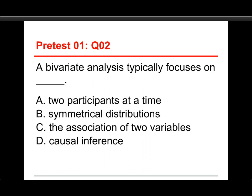For number two: a bivariate analysis typically focuses on what? Two participants at a time, symmetrical distributions, the association of two variables, or causal inference? The answer is C, the association of two variables. Bivariate means two variate variables, and you're looking at associations. This is typically contrasted with univariate, which means one variable at a time. Two participants at a time would be a case study of two people, but that wouldn't be a bivariate analysis. Symmetrical distributions are nice to deal with, but that's not a bivariate analysis. And while causal inference does involve a bivariate analysis, there's much more to it — most bivariate analyses are correlational and not causal. So a bivariate analysis typically focuses on C, the association of two variables.